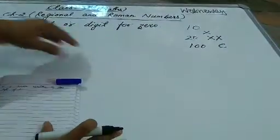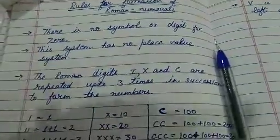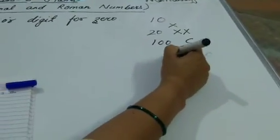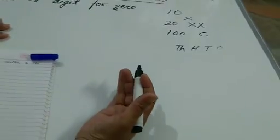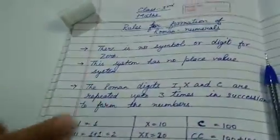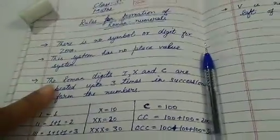Zero के लिए उनका कोई अलग से symbol बनाया ही नहीं है। Now come to the second point: this system has no place value system. Place value system जैसे कि हमारे में है — ones, tens, hundreds, thousands, ten thousands — अपना place value होता है international system में, Hindu-Arabic system में. But in Roman numerals there is no place value system.